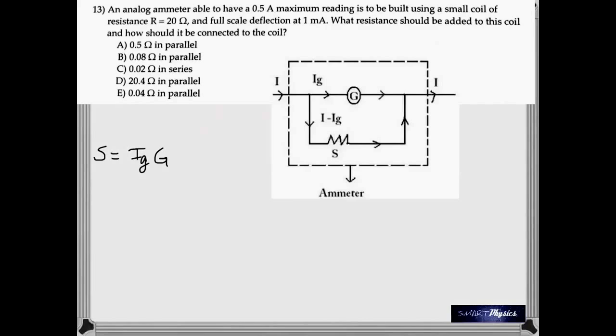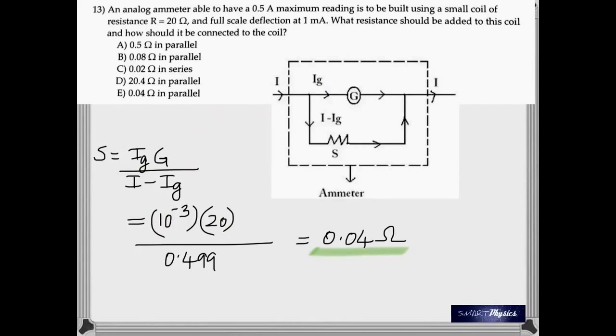Now to convert a galvanometer into an ammeter. You need to connect a low resistance called shunt in parallel to it. That's what the diagram shows. This is the galvanometer. And this is the maximum safe current through it. IG. The shunt connected is S. And the formula for shunt is just IG G by I minus IG. Remember G is the resistance of the galvanometer. So 1 milliampere in amperes is 10 to the negative 3. 20 is the resistance of the galvanometer. And on calculation you get 0.04 ohm.